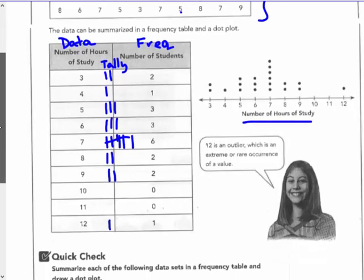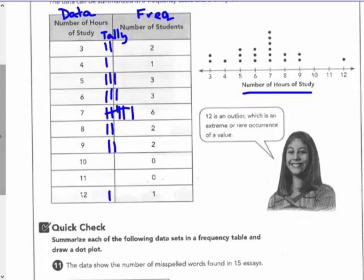So, I'm going to count down or add up my frequencies. 2 plus 1 is 3. Plus 3 is 6. Plus 3 is 9. And 6 is 15. 17. 19. And 0 is 19. And 1 more makes 20. I like to put a total at the bottom of my frequency table. Did I get all 20 data points in my frequency table? Yes.